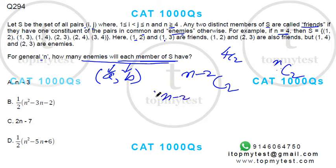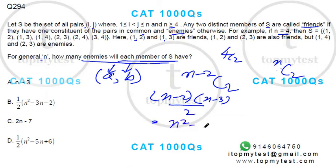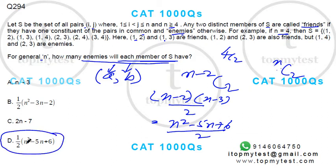Each pair has two members, so the number of enemy pairs is C(n-2, 2) = (n-2)(n-3)/2, which equals (n² − 5n + 6) / 2. Option D is the correct choice.